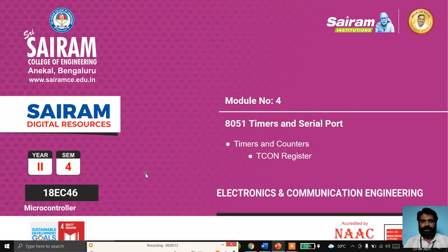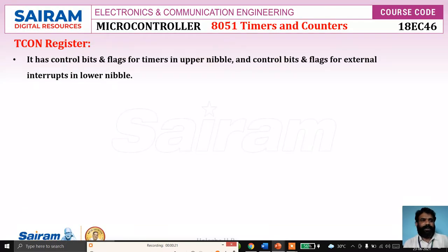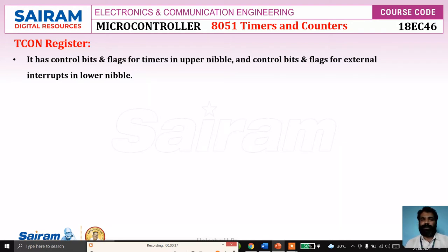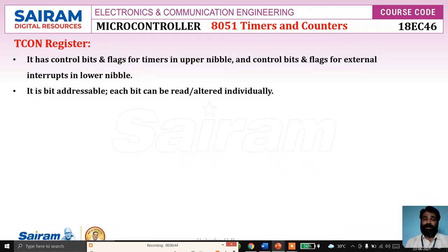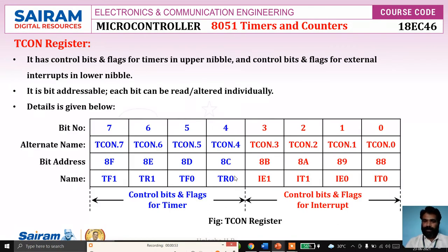Good morning. In continuation of the previous video, in this video I am going to explain the details of the TCON register. TCON register is an 8-bit register. It has control bits and flag bits for the timer in the upper nibble, and control bits and flags for external interrupt in the lower nibble — that means 4 bits assigned to control and flag bits for the timer and the lower 4 bits assigned to control and flag bits of external interrupt.